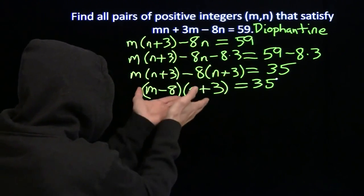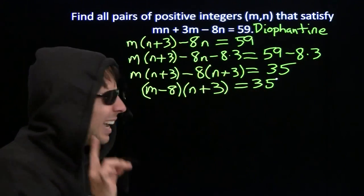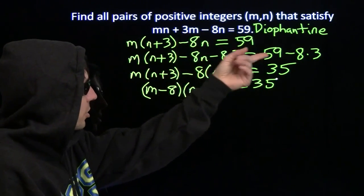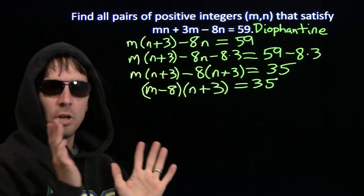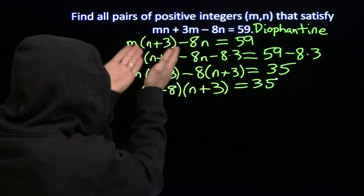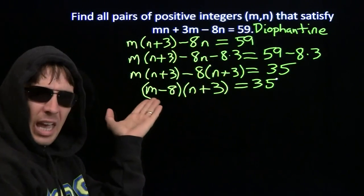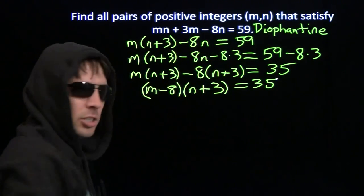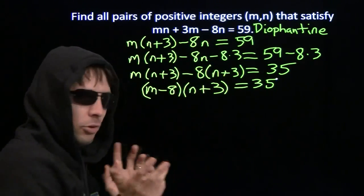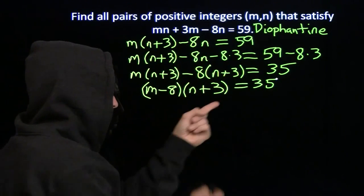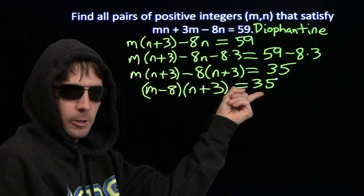So now we have this times this equals 35. Now, here's where the bit about integers, this Diophantine bit, is so important. Because m and n are integers, m minus 8, and n plus 3 are integers.